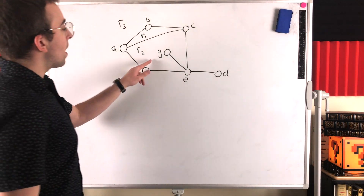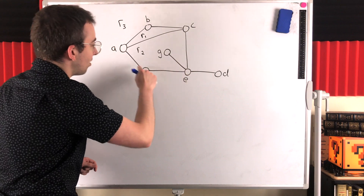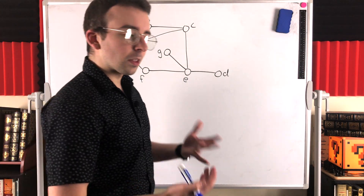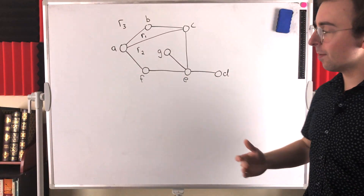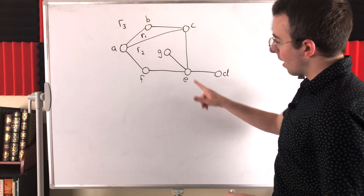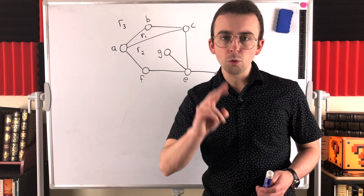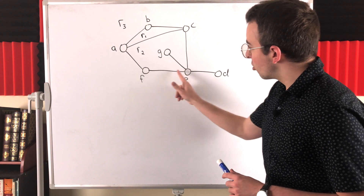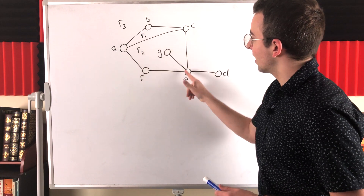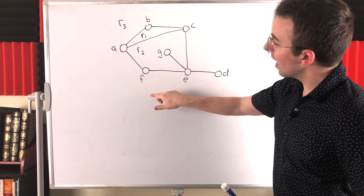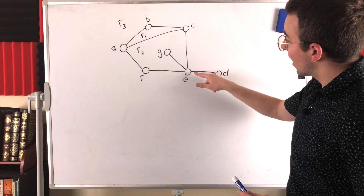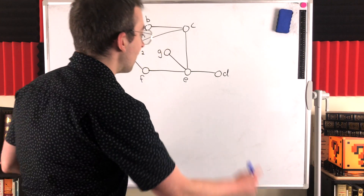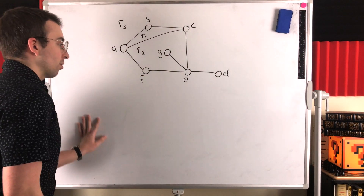On the other hand, the boundary of the region R2 consists of these vertices and edges here. Now, an important concept underlying the degree of a region is that an edge of a plane graph will lie on the boundary of two regions. If the edge lies on a cycle, like this edge here, it lies in the boundaries of the regions R2 and R3. However, an edge like this one that doesn't lie on a cycle will be in the boundary of just one region — in this case, this edge is in the boundary of the external region R3.